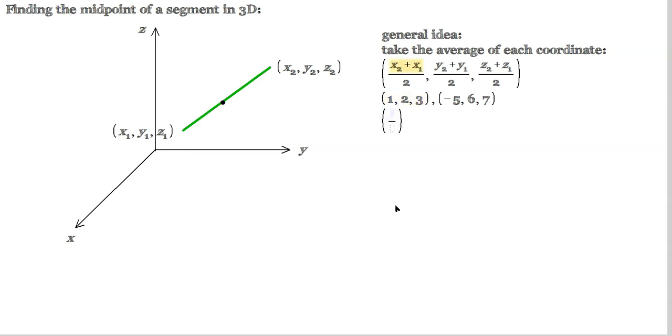You basically proceed as follows. You do 1 plus negative 5. So at first it would look like this: 1 plus negative 5 divided by 2, comma. Then it would look next as 2 plus 6 divided by 2. And then it would look like 3 plus 7 divided by 2.